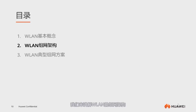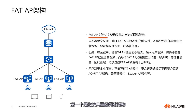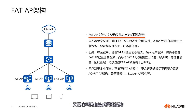Hello everyone. Today we will discuss WLAN networking architecture. Let's first take a look at the first type of typical network architecture known as the FAT-AP architecture, also called the autonomous network architecture.